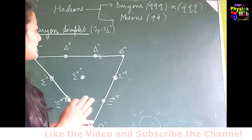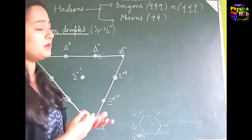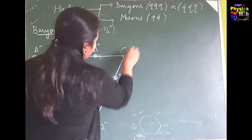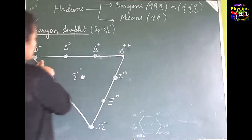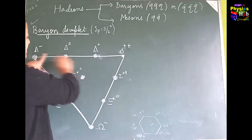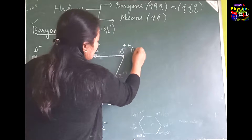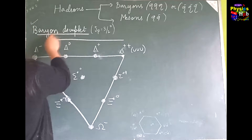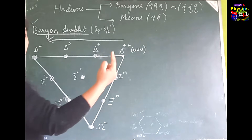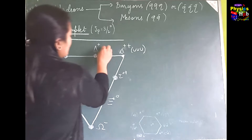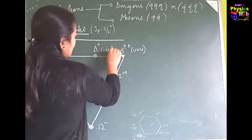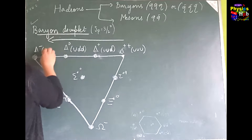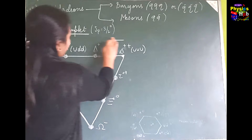Knowing the sequence of particles is enough to work out quark compositions. In the delta family (top layer), the quark composition starts at uuu on the right. Moving left, u decreases and d increases, giving uud, then udd, then ddd.